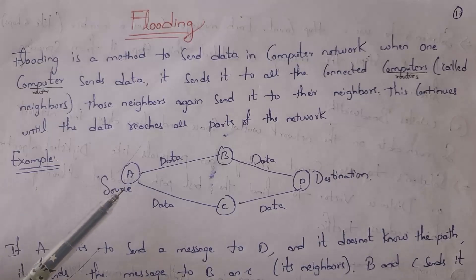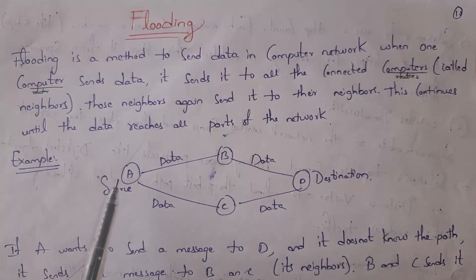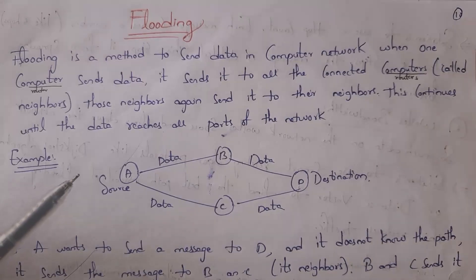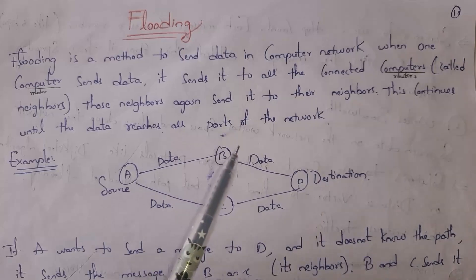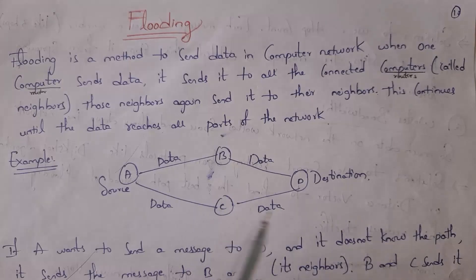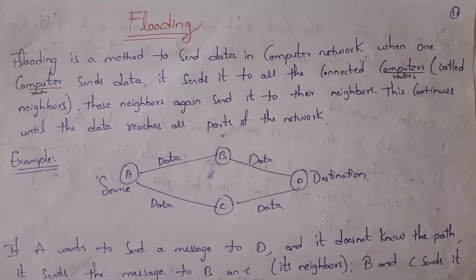Data will keep threading until it successfully reaches the destination. For example, router A wants to send data to router D, but router A doesn't know the path to router D. So router A sends data to all its connected routers — router B and router C. Router B is connected to router D, so B sends data to D. Similarly, C's neighbor is D, so C also sends data to D, and the data reaches its destination.